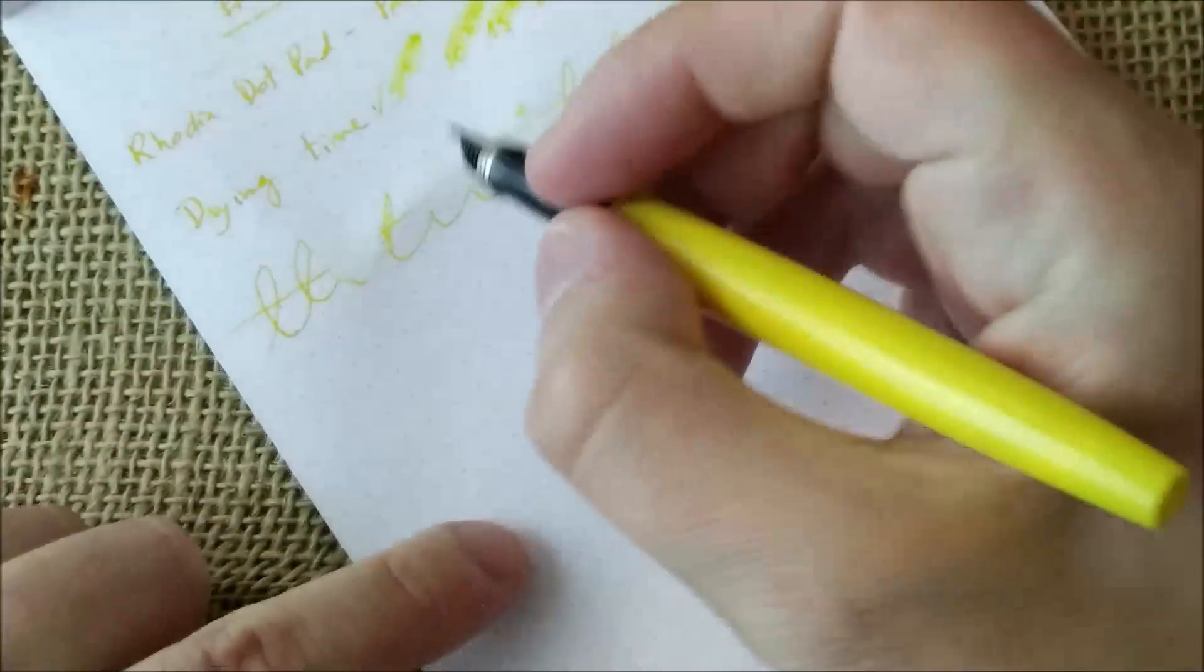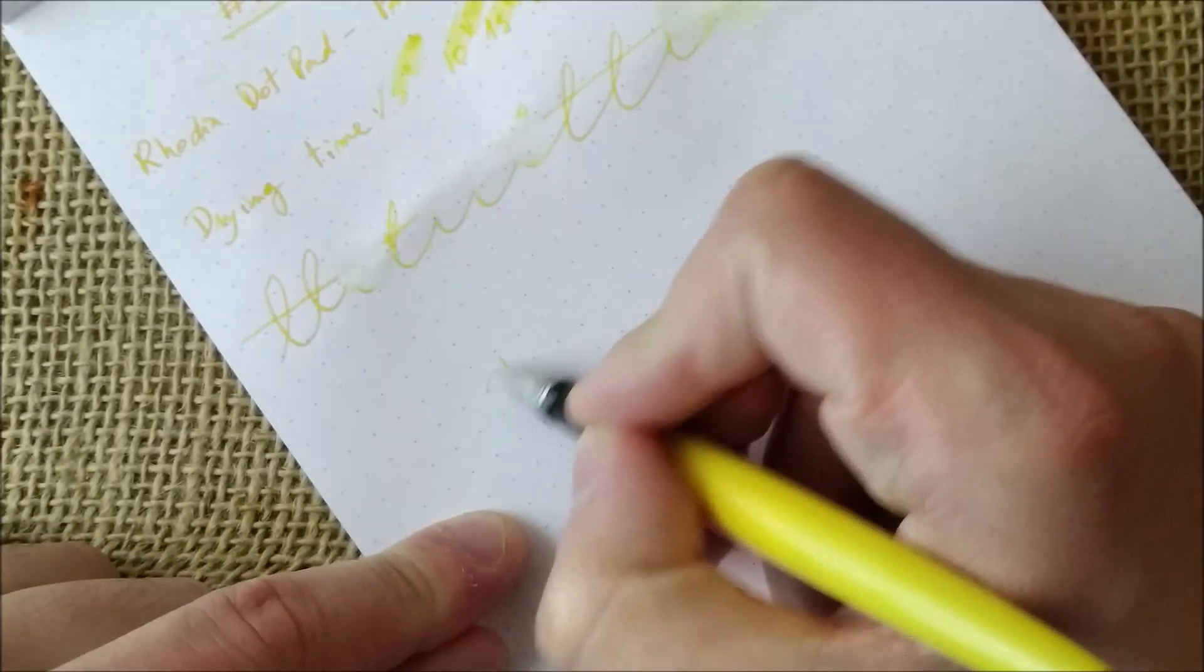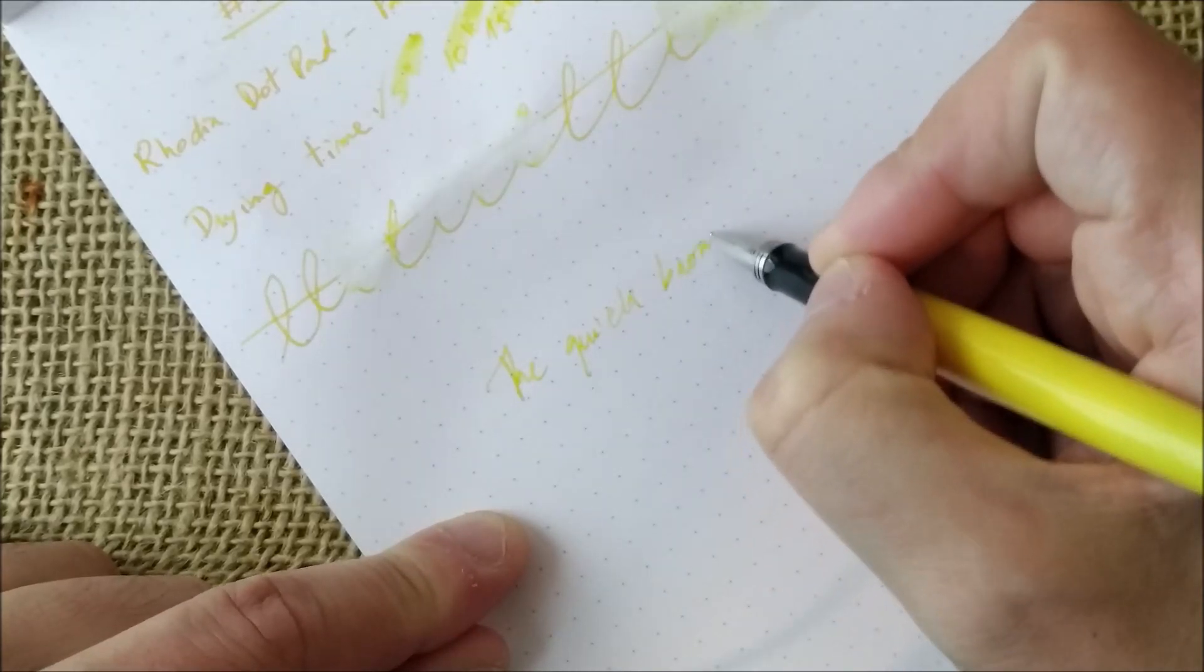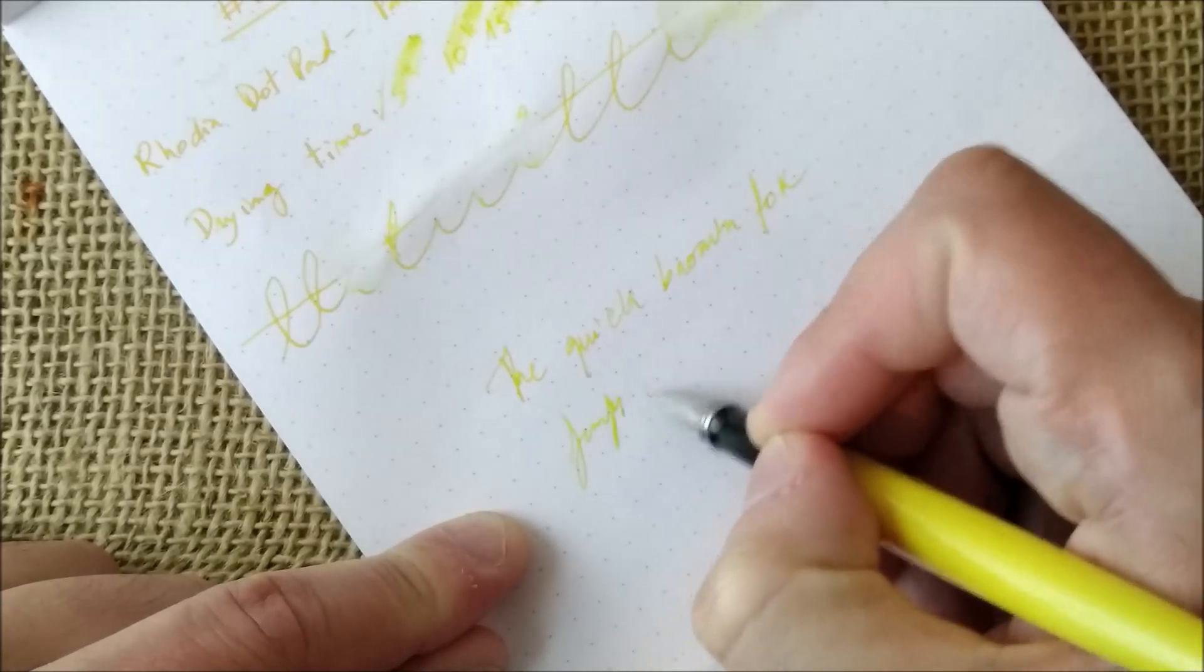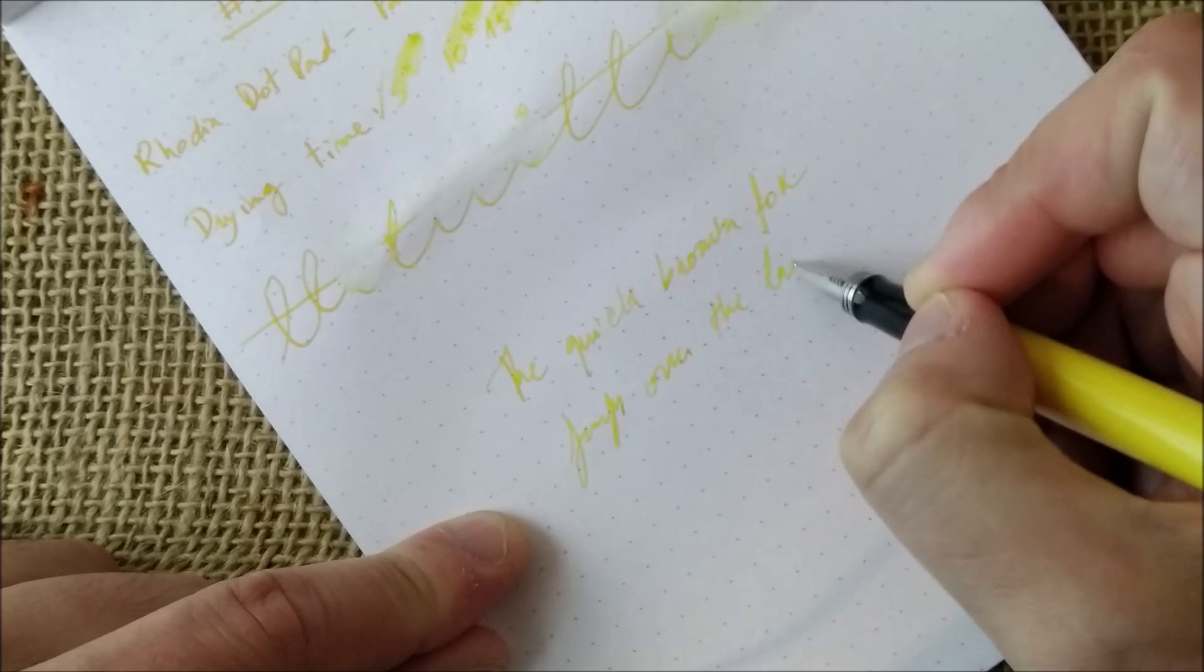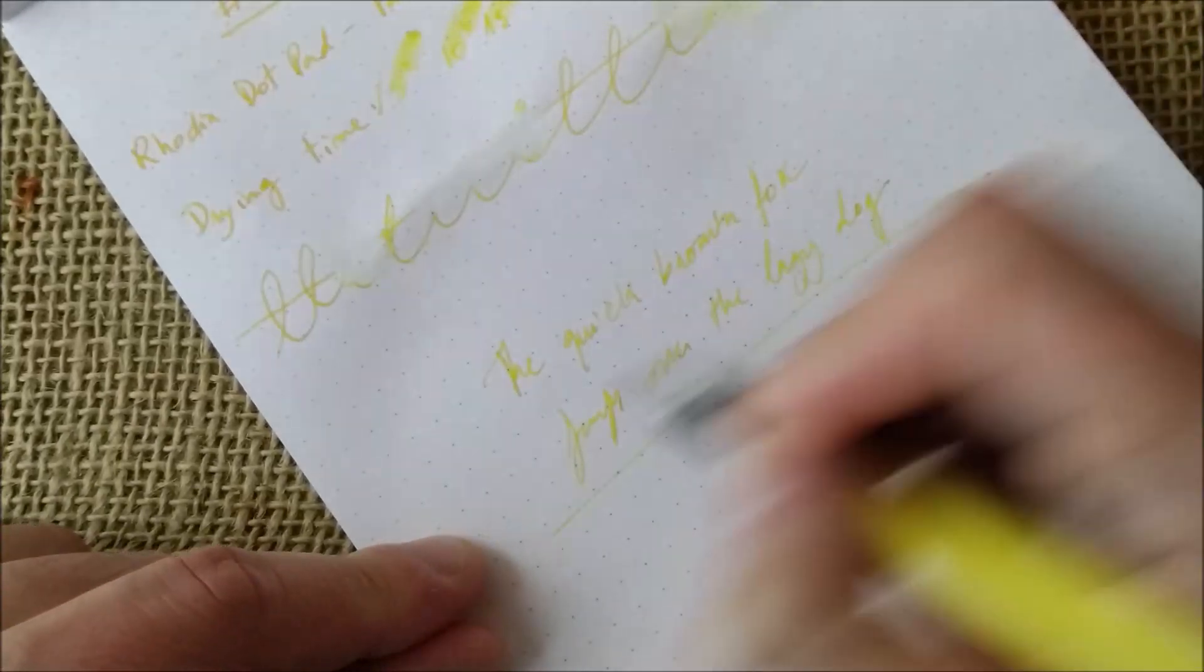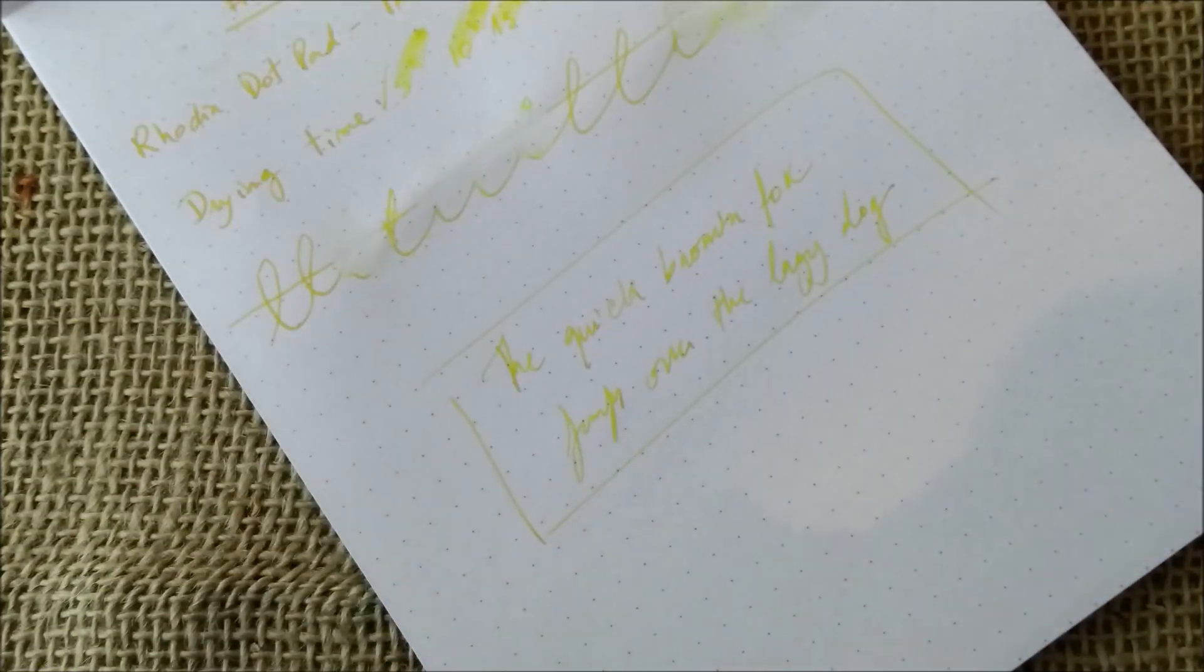And now let's just do the writing sample on camera. And guess what I'm going to write? The quick brown fox jumps over the lazy dog. And about this ink. I like the flow, I like everything about it except maybe the color.